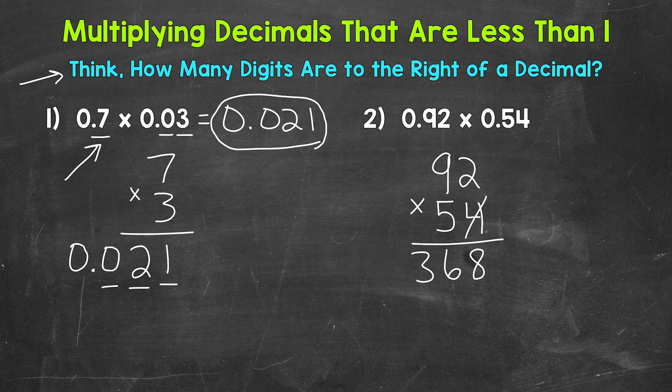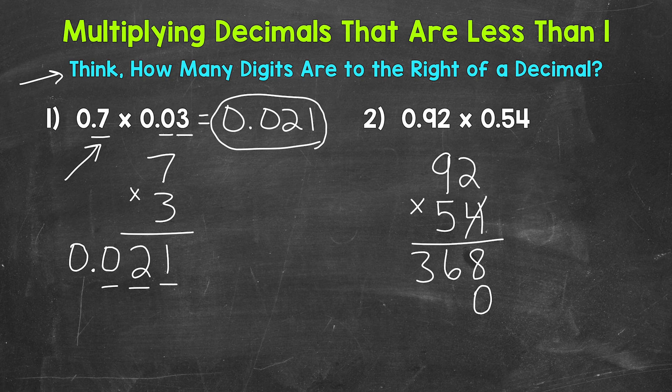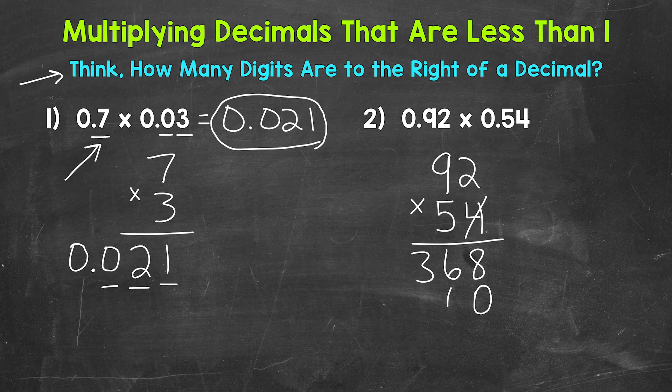We're done with this 4. Now we need a 0 here, because we are moving one place to the left. 5 times 2 is 10, so we have another 0. Carry the 1.